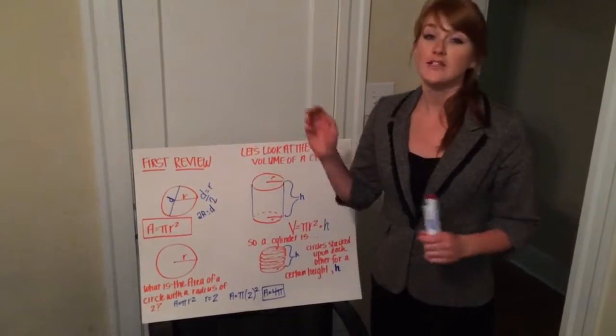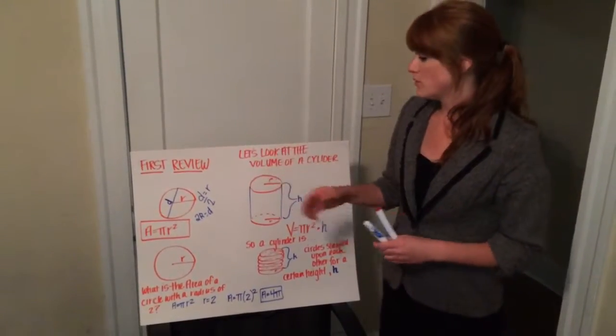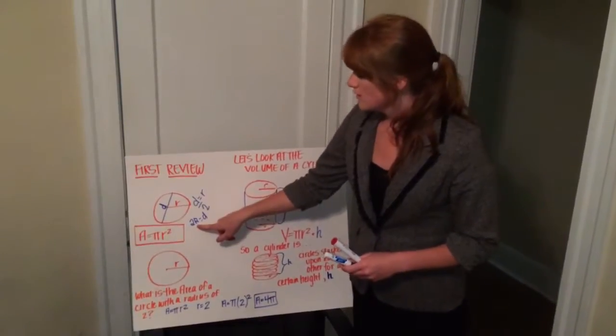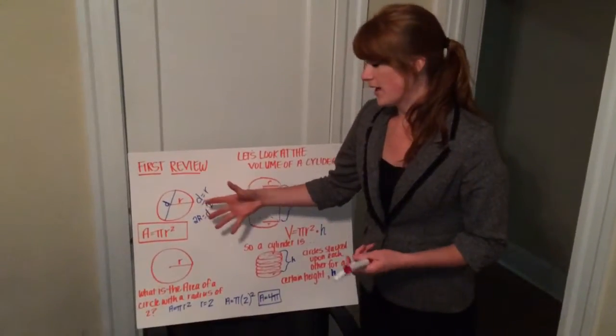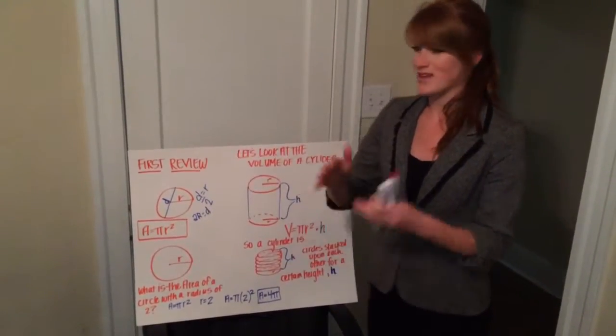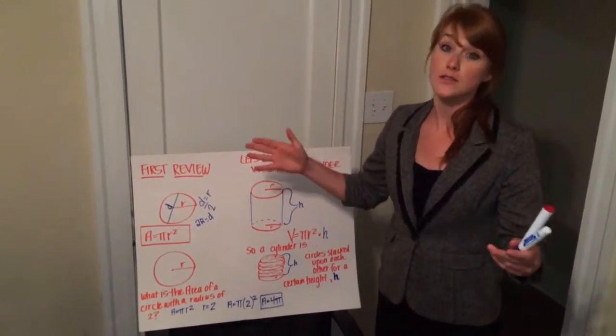The diameter of your circle, or 2r, is equal to your diameter. So you have two radiuses that make up that distance across the circle.